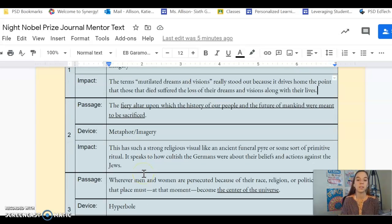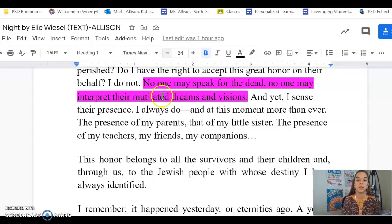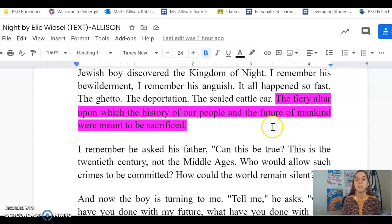Let's look at one more together to make sure you're understanding this concept. So the next one I found as I was reading through this one, the fiery altar upon which the history of our people and future of mankind were meant to be sacrificed. Again, that's a really powerful image. It is symbolic in the fact that he's saying there's an action.